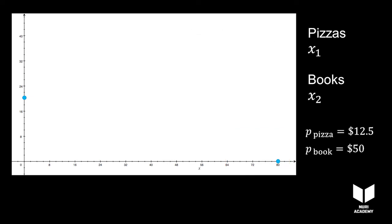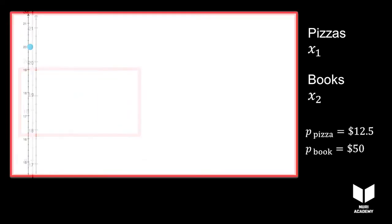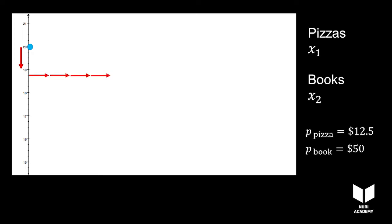What about the points in between? Books in this example are four times as expensive as pizzas. Then if you decide to buy one fewer book, you'll be able to buy four more pizzas, and this ratio...